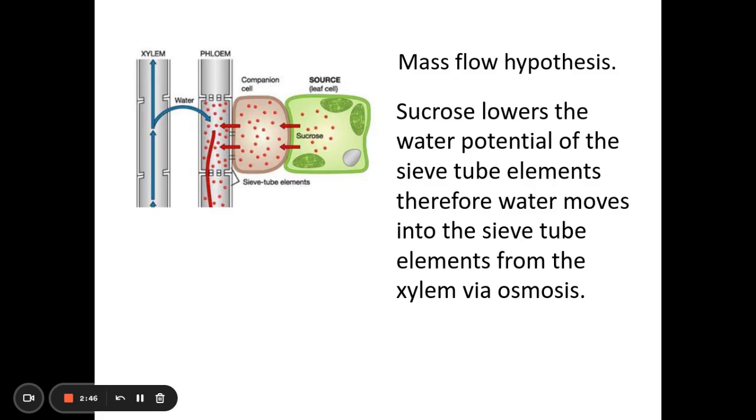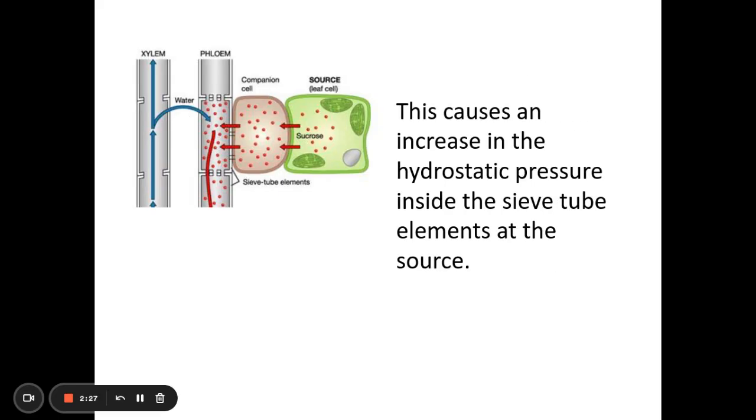And what happens in this bit is because the sucrose has moved into the sieve tube element, this will lower the water potential of the sieve tube elements. And therefore water is now going to move into this area via osmosis, either from surrounding tissues or from the xylem. Now because the water has moved into the sieve tube elements, this is going to cause an increase in the hydrostatic pressure inside of the sieve tube elements here at the source. So here they're going to get an increase in that hydrostatic pressure.